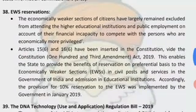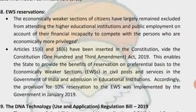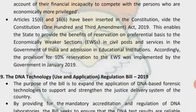Next topic: EWS reservation. The economically weaker section of citizens have largely remained excluded from higher educational institutions and public employment due to their financial incapacity to compete with economically more privileged persons. Articles 15(6) and 16(6) have been inserted in the Constitution by the Constitution (103rd Amendment) Act, 2019. This enables the state to provide reservation on a preferential basis to the EWS in civil posts and services, and in admission to educational institutions. Accordingly, a provision for 10% reservation to EWS was implemented by the government in January 2019.